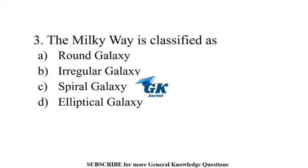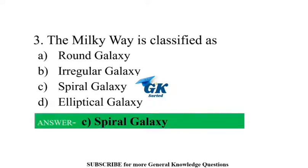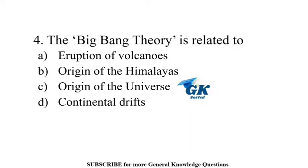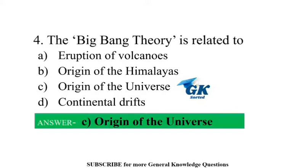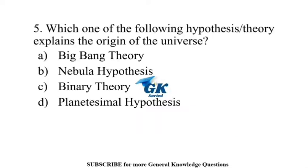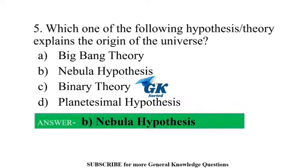The Milky Way is classified as a Spiral Galaxy. The Big Bang Theory is related to the origin of the Universe. Which one of the following hypothesis or theory explains the origin of the Universe? Nebula Hypothesis.